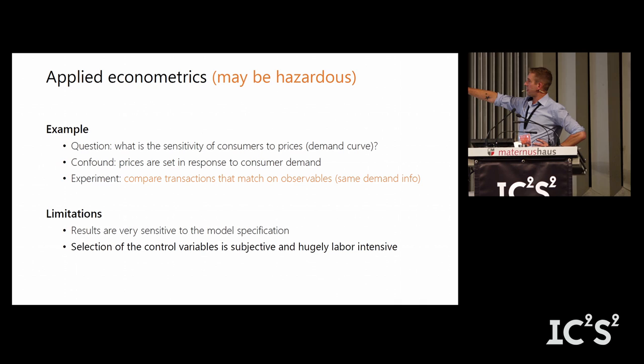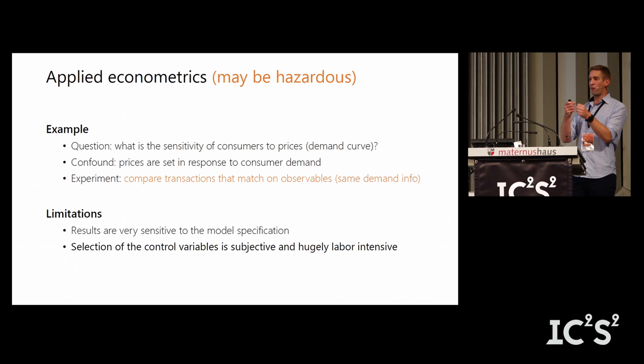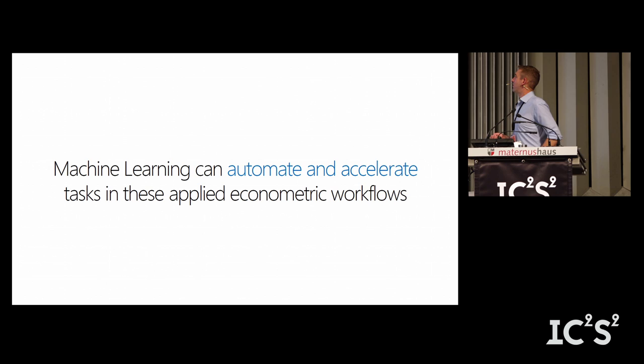The issue here is very much about labor and subjectivity. Selecting control variables — the things you want to match on — there will be way too many candidates. You can't include everything in a simple OLS regression, so you spend weeks or months carefully picking variables and tuning things until your p-values look nice. That's problematic. So that's my intro spiel, which took 15 minutes.